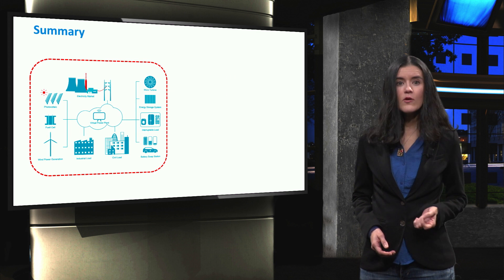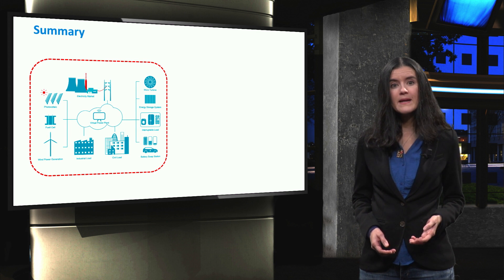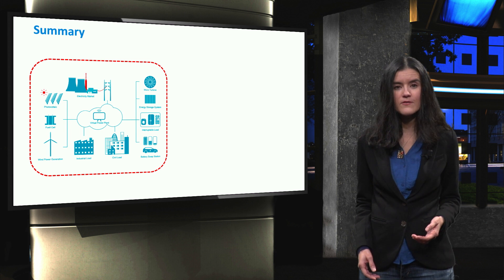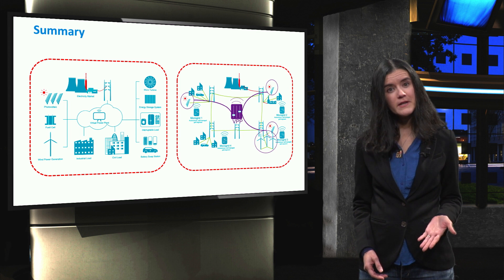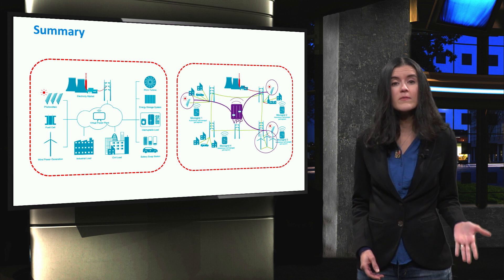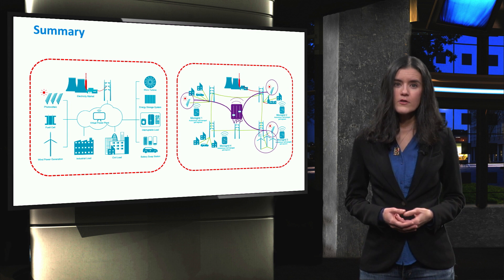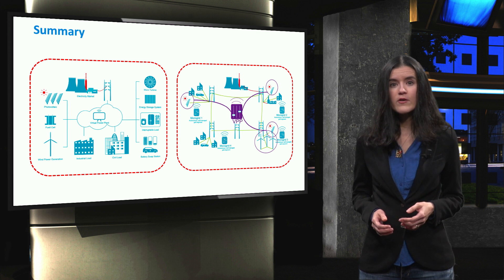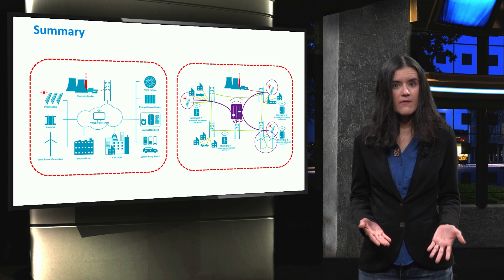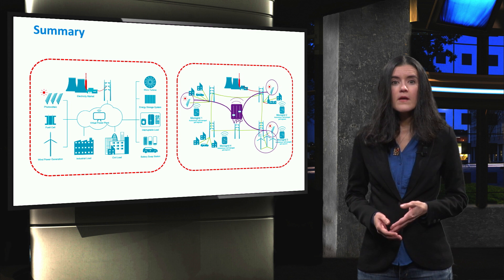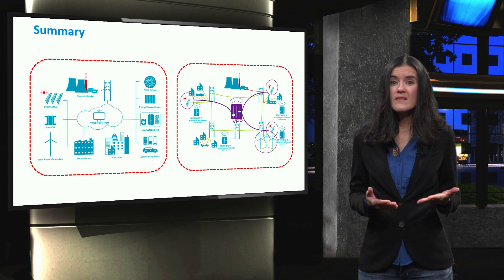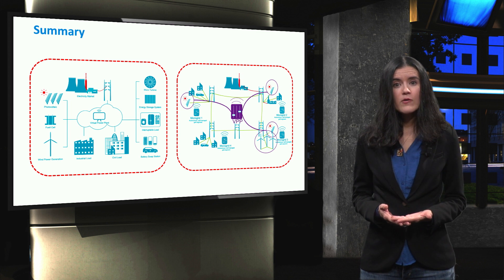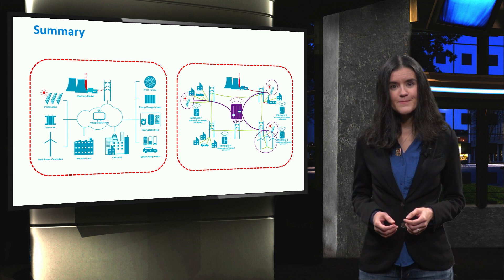To summarize, in this video we have seen what a VPP is and what type of generators and loads are usually controlled to enhance flexibility and satisfy demand. We saw how to differentiate the concept of VPP from the concept of microgrid. VPP tends to aggregate distributed generation over a wider geographical area and typically has a higher installed capacity compared to a microgrid. Finally, VPP tends to consider consumption as a source of flexibility, whereas the aim of a microgrid is to meet the local load requirements.